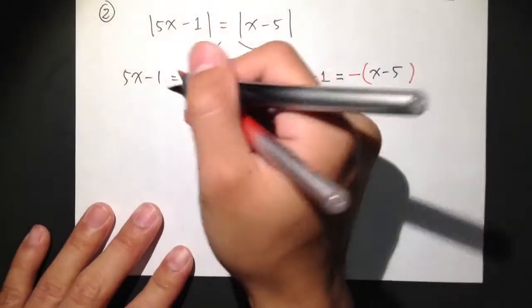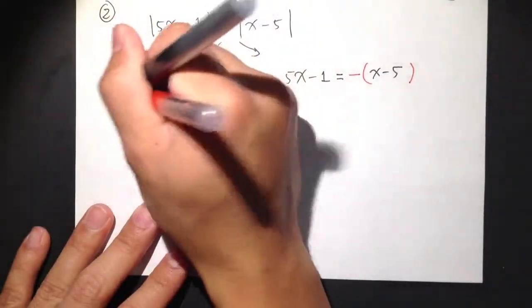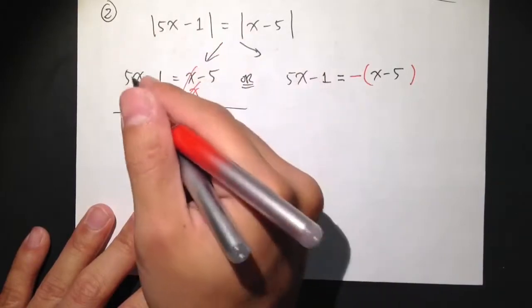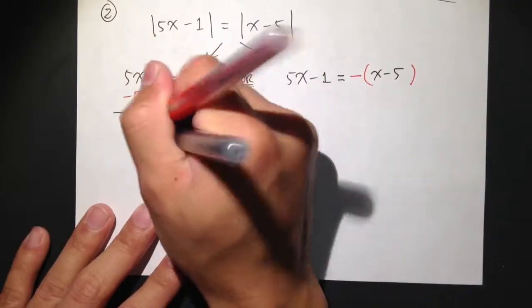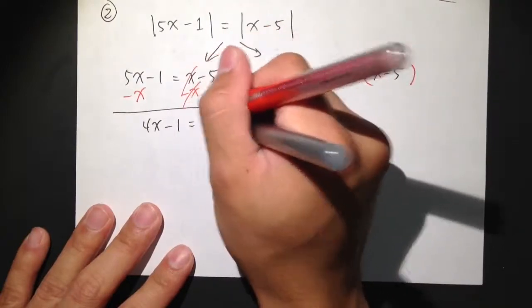So here, let's put all the x to the left-hand side, minus x on both sides. So these two cancel out, I get 5x minus x is 4x minus 1 is equal to minus 5.